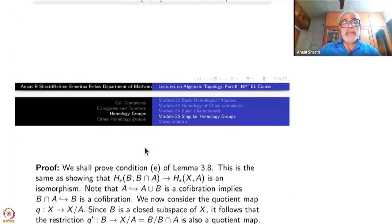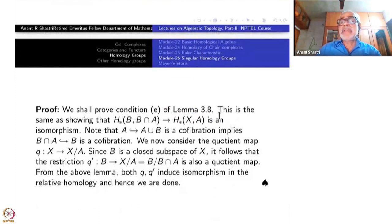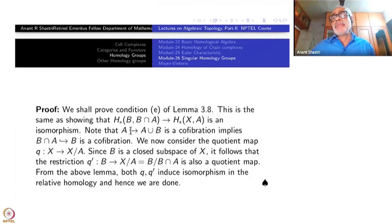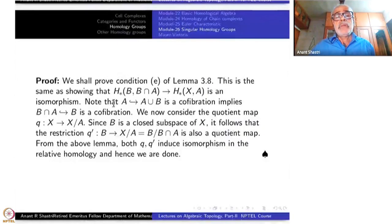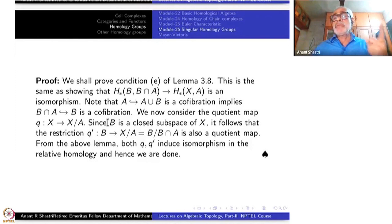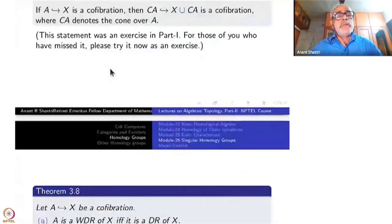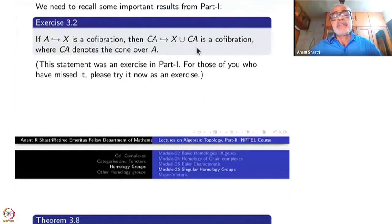We shall prove condition E of Lemma 3.8 — remember there are five different conditions for excision. Condition E is: H_*(B, B∩A) to H_*(X,A) is an isomorphism. Note that A to A∪B being a co-fibration implies B∩A to B is a co-fibration. This is similar to the earlier exercise. We have A to A∪B is a co-fibration; B to A∪B may not be, but B∩A to B is a co-fibration.